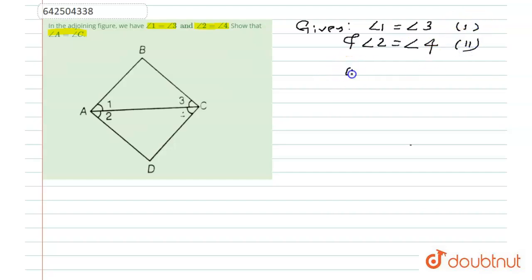Adding equation 1 and equation 2, so angle 1 plus angle 2 is equal to angle 3 plus angle 4. Angle 1 plus angle 2 is nothing but angle A, so this is angle A. Similarly, angle 3 plus angle 4 is nothing but angle C, so this is angle C.